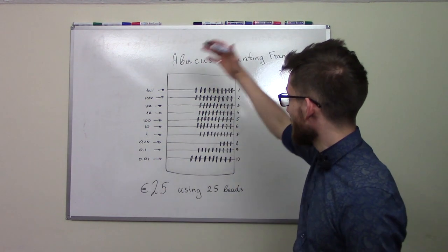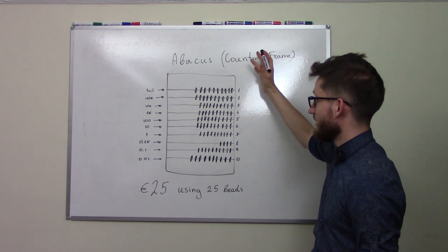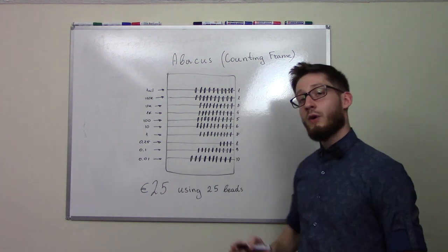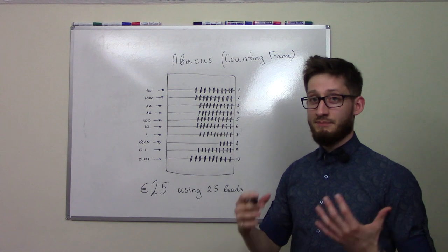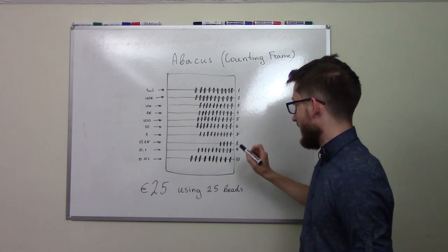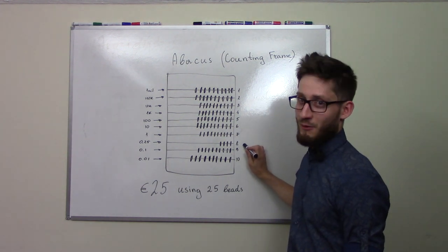But anyway, as you can see on the whiteboard, this is abacus, the frame with 10 wires. Every wire consists of 10 bits, except wire number 8, which consists of only 4.